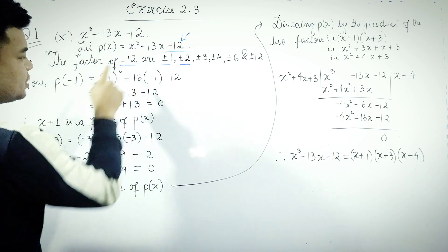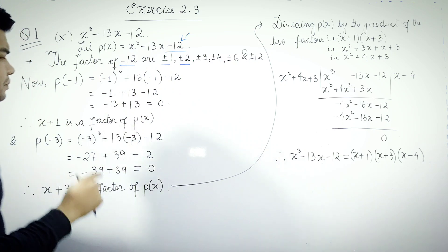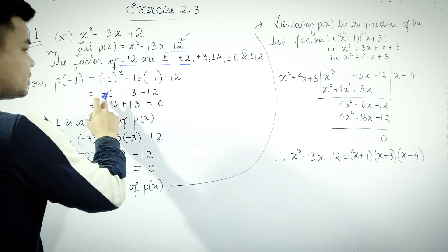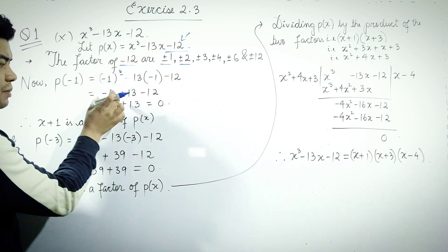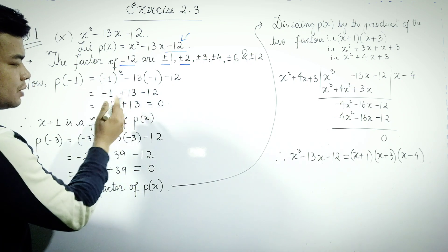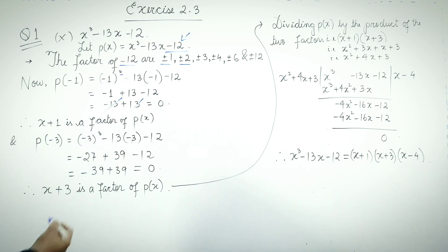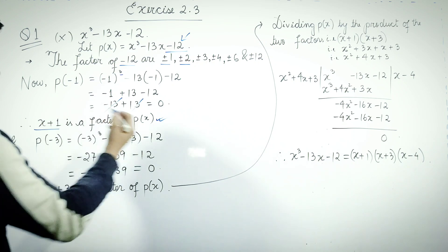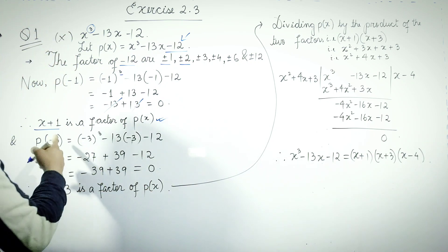We evaluate p(minus 1): minus 1 whole cube minus 13 times (minus 1) minus 12. This gives minus 1 plus 13 minus 12, which equals zero. So x plus 1 is a factor of p(x).